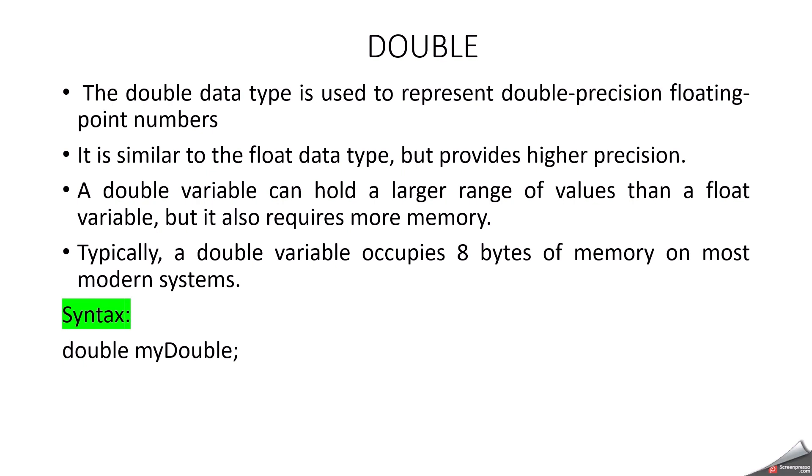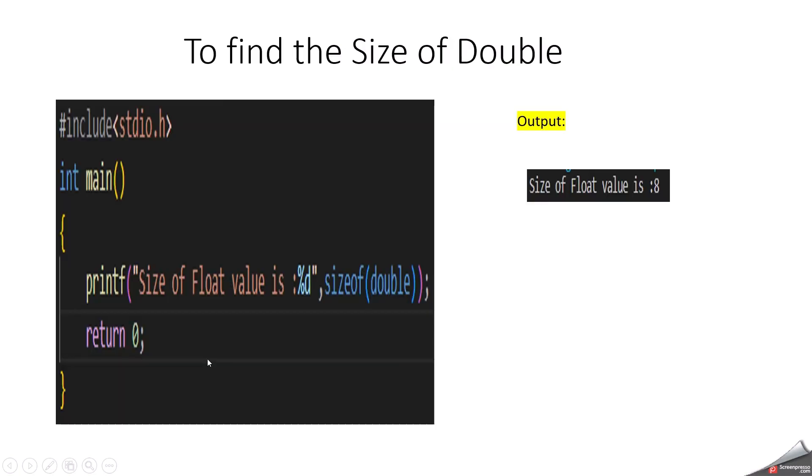Typically, a double variable occupies 8 bytes of memory on most modern systems. Again it will vary compiler by compiler. You can also find out the size in your compiler. The syntax for declaring a double: you can use the keyword double. This is a variable name. Here I have used a variable name called myDouble. This is another simple program to find out the size of double. Here for me it returns 8. Here also I am using sizeof operator.